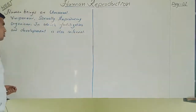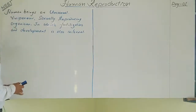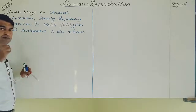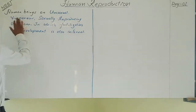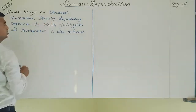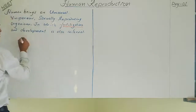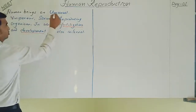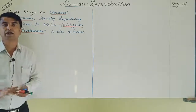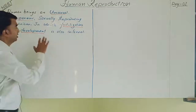Some important terms: unisexual means both male and female organisms are totally different, and sexual dimorphism is clearly visible. Viviparous means the organism which gives birth to young ones. In sexually reproducing organisms, fertilization is internal and development is also internal.